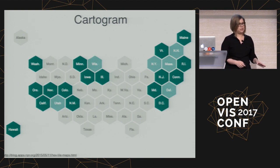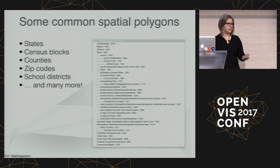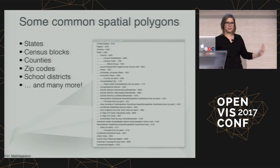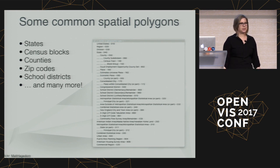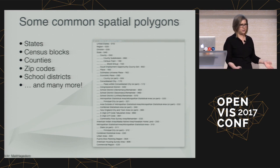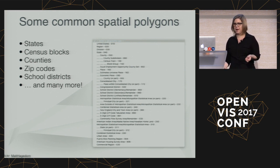I want to talk about some common spatial polygons used to aggregate data. We've talked about states. The census has many enumeration units you can choose: census blocks, census tracts, counties, zip codes, school districts, and many more. Almost none of these spatial polygons are naturally occurring — they all arose from some human political process where a person decided where to draw the line. So it often doesn't make sense to aggregate data into spatial polygons, but people do it because it's easy and looks pretty.